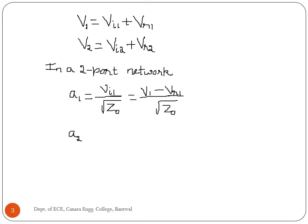The normalized incident wave at port 2, A2, is equal to V_i2 divided by root Z0, which is equal to V2 minus V_r2 divided by root Z0.